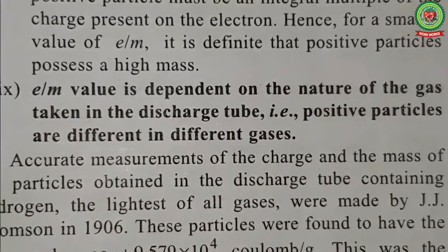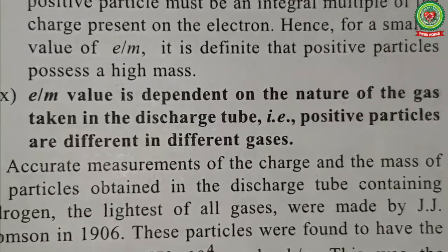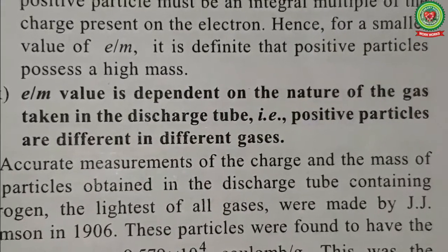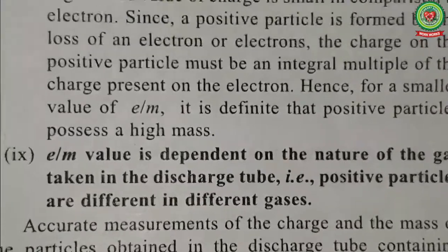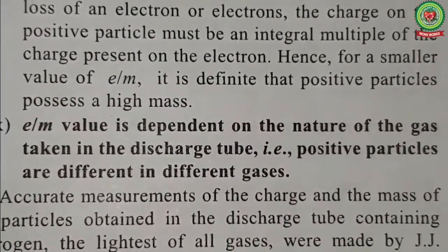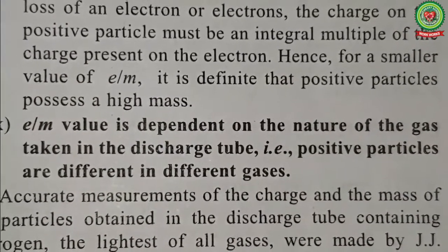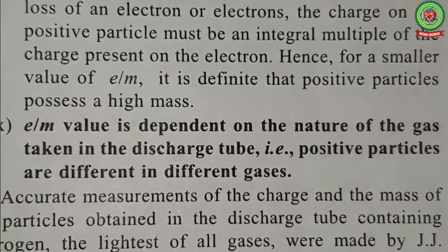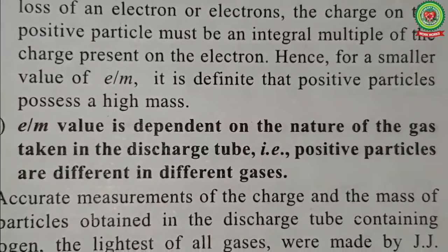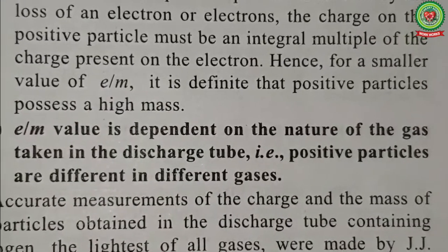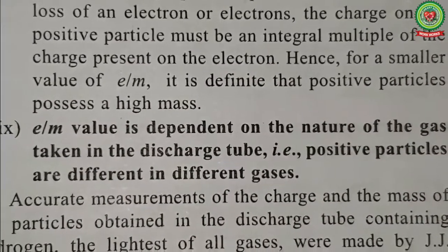Unlike cathode rays — which are independent of the gas in the discharge tube — anode rays depend on the nature of the gas, because the positive particles are different in different gases. For example, if helium gas is used and an electron is knocked out, the leftover part is He⁺. If chlorine is used, the leftover part is Cl⁺. So the positive particle produced depends on the gas taken in the discharge tube.